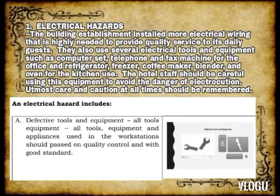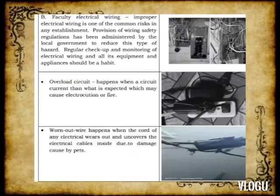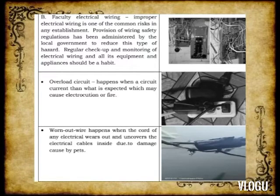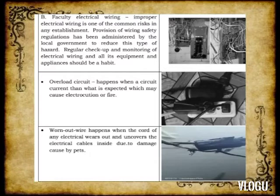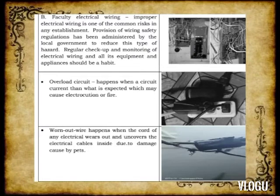Electrical hazards include: A. Defective tools and equipment — all tools, equipment, and appliances used in workstations should pass quality control and meet good standards. B. Faulty electrical wiring — improper electrical wiring is one of the common risks in any establishment. Provision of wiring safety regulations has been administered by the local government to reduce this type of hazard. Regular check-up and monitoring of electrical wiring and all equipment should be a habit. Next is overload circuit, which happens when a circuit carries more current than expected, which may cause electrocution or fire. The next is worn-out wire, which occurs when the cord of any electrical wire wears out and uncovers the electrical cables inside due to damage.